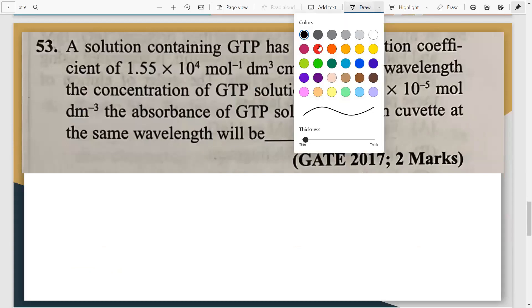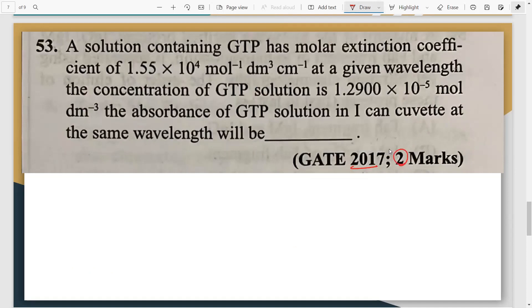First let us move on to this question asked in GATE 2017 for a whole two marks. The question says a solution containing GTP has a molar extinction coefficient of this much. So that's epsilon. At a given wavelength the concentration of GTP is this. So this is concentration C. They are asking you the absorbance. For solution in one centimeter cuvette at the same wavelength. So simply the formula is A is equal to epsilon C L.